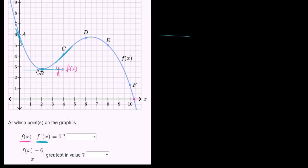Another way to think about it: the instantaneous rate of change at x equals 2 looks pretty close to 0. So out of all the choices, only B looks like the derivative — the slope of the tangent line at B — is 0. So the answer is B.